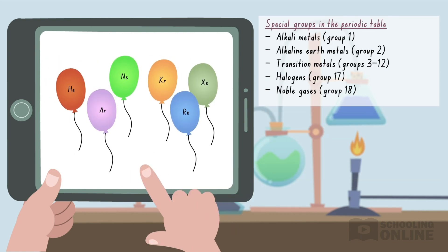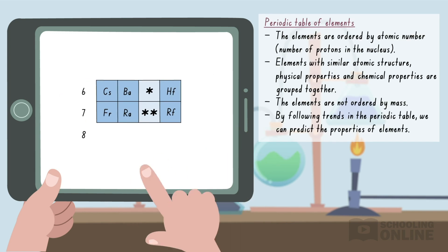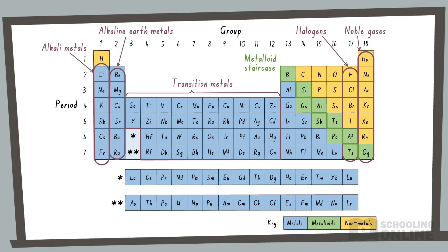Some groups are given their own names. This includes the alkali metals, alkaline earth metals, transition metals, halogens and noble gases. By following trends in the periodic table, we can predict the characteristics of elements. To conclude, we've annotated the periodic table to show all the important regions. Pause the video here if you would like to read it and copy it down.